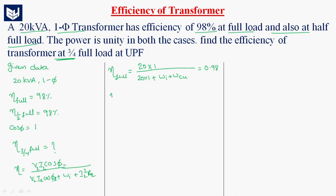So it implies that 20 divided by 0.98, minus 20 is equal to iron losses plus copper losses. 20 divided by 0.98 is 20.408, minus 20 gives 0.408. Units are kilowatts. Let us consider this as equation 1.